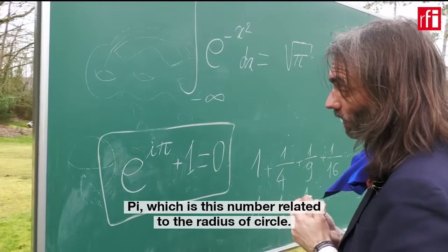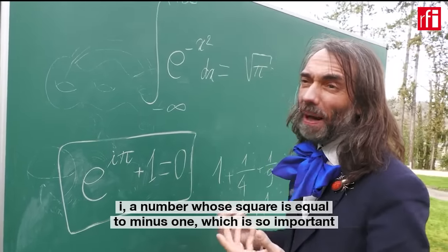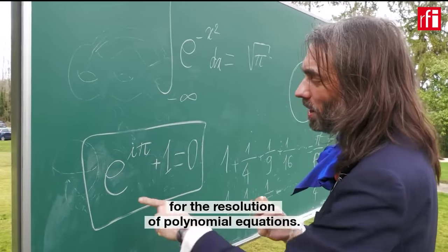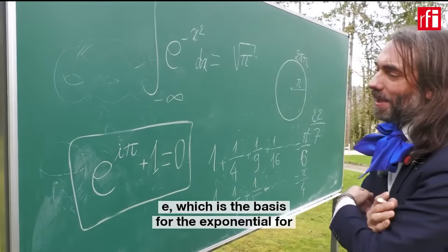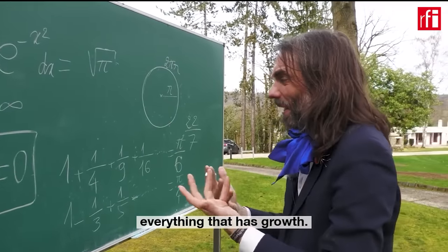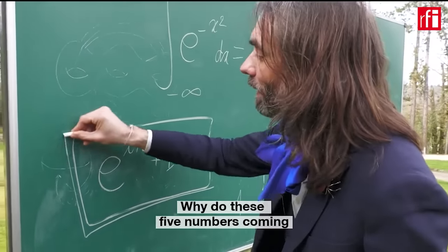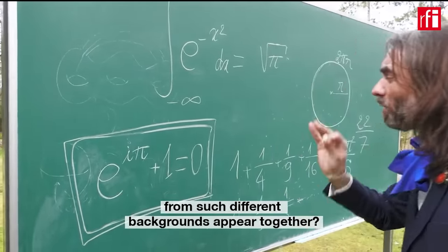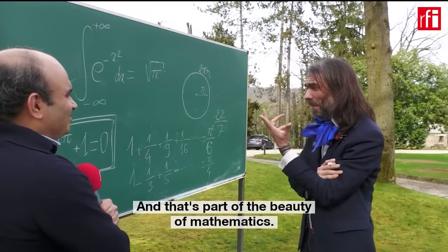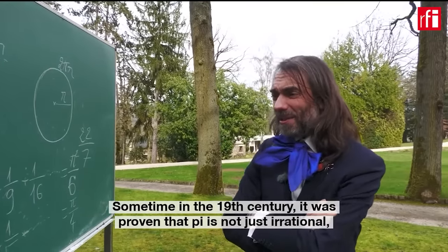...pi, which is this number related to the radius of circles; i, a number whose square is equal to minus one, which is so important for the resolution of polynomial equations; e, the basis for the exponential, for everything that has growth. Why do these five numbers coming from such different backgrounds appear together? That is amazing, and that's part of the beauty of mathematics.